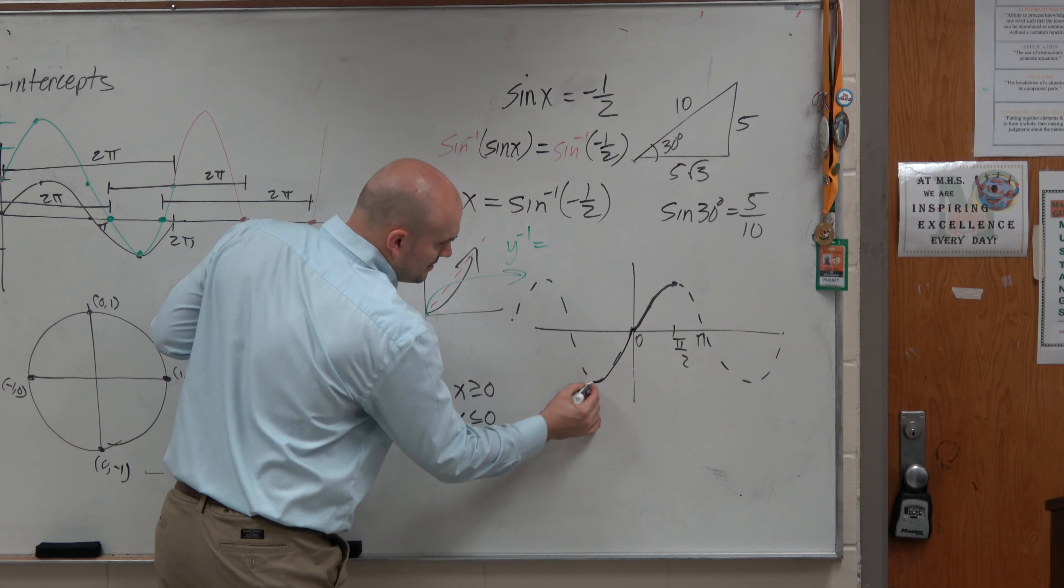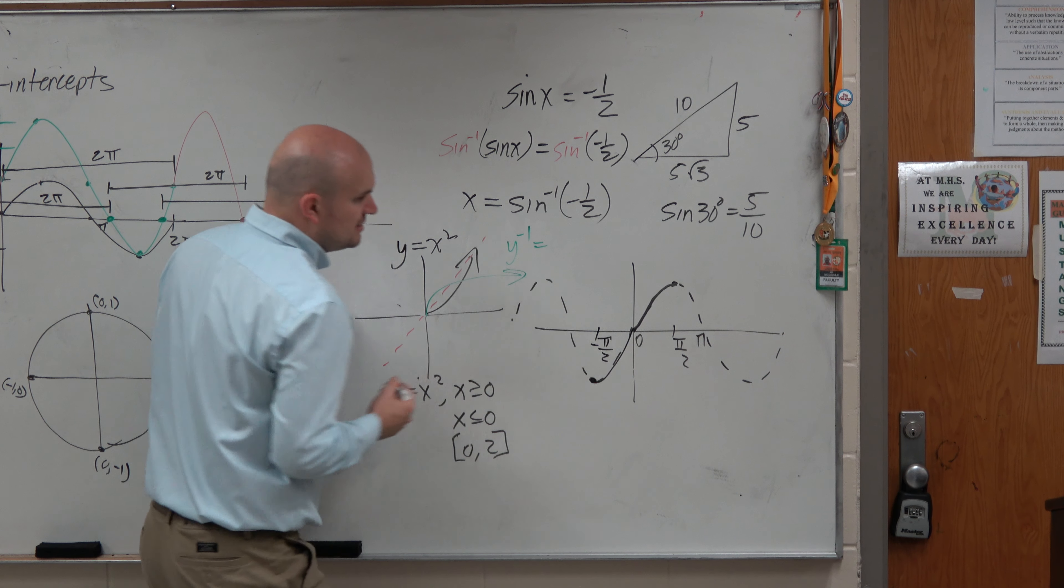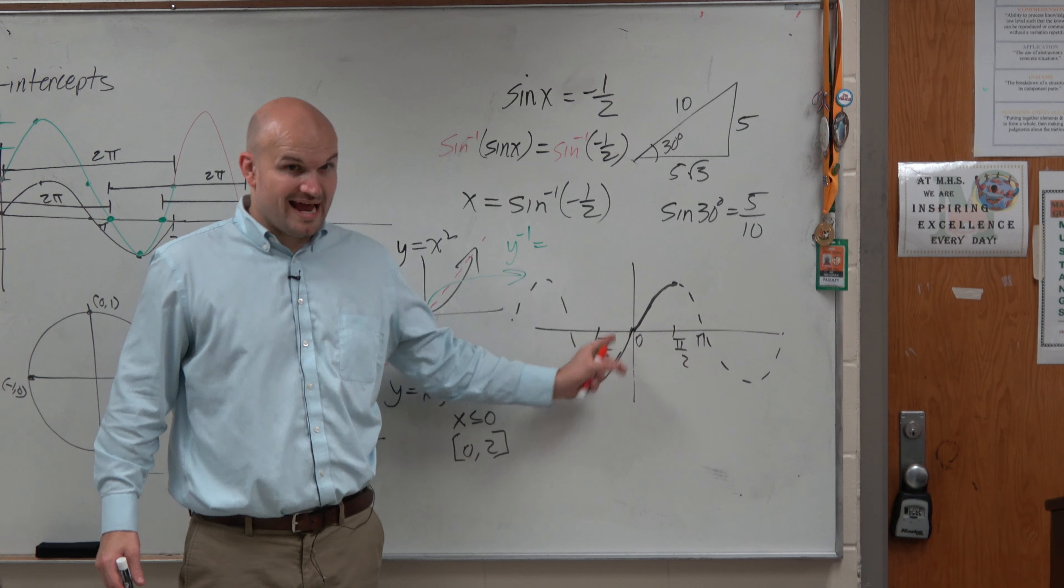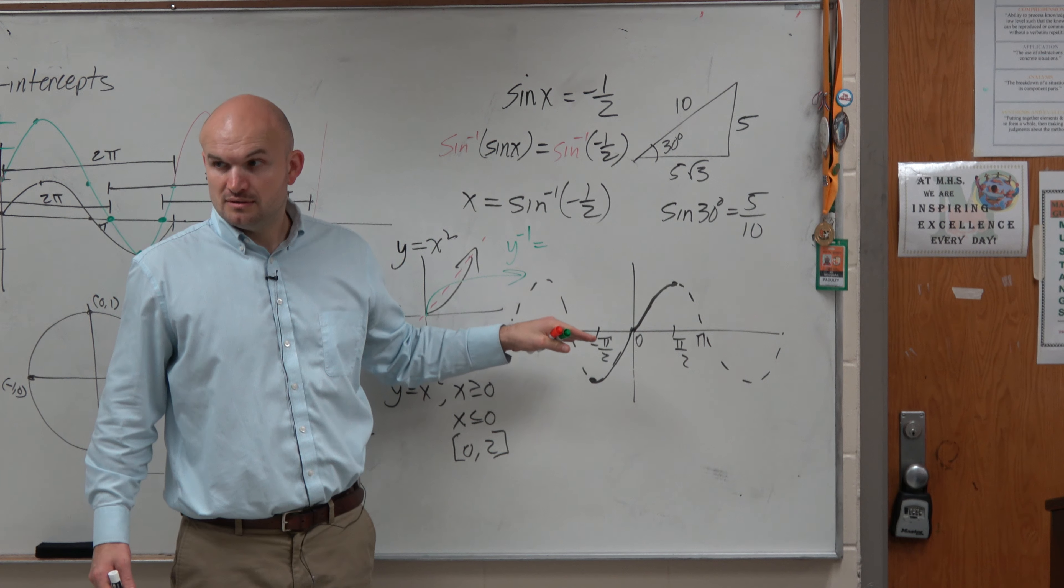if I just continue this to here, to negative pi over 2, that basically gives us like half of the unit circle. And this is still invertible, correct? Right?